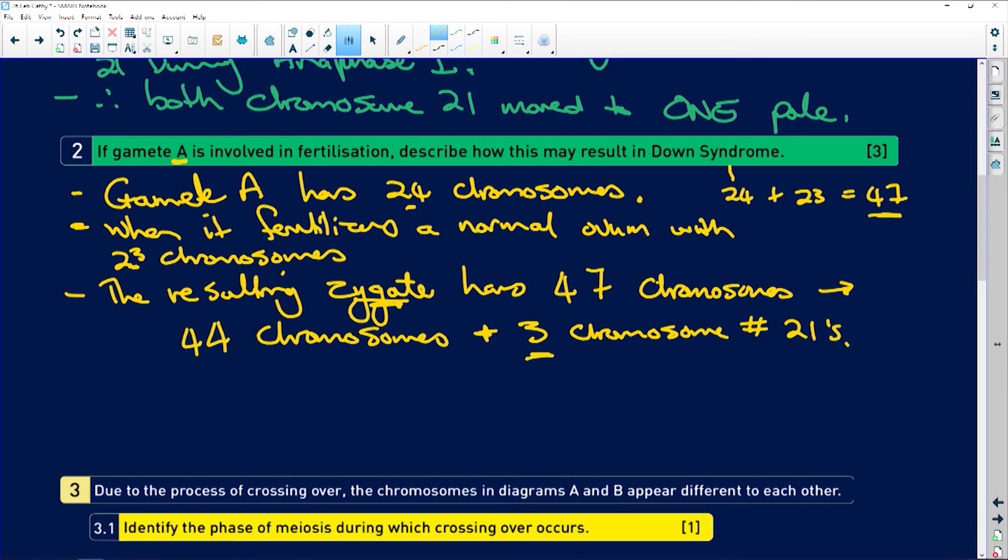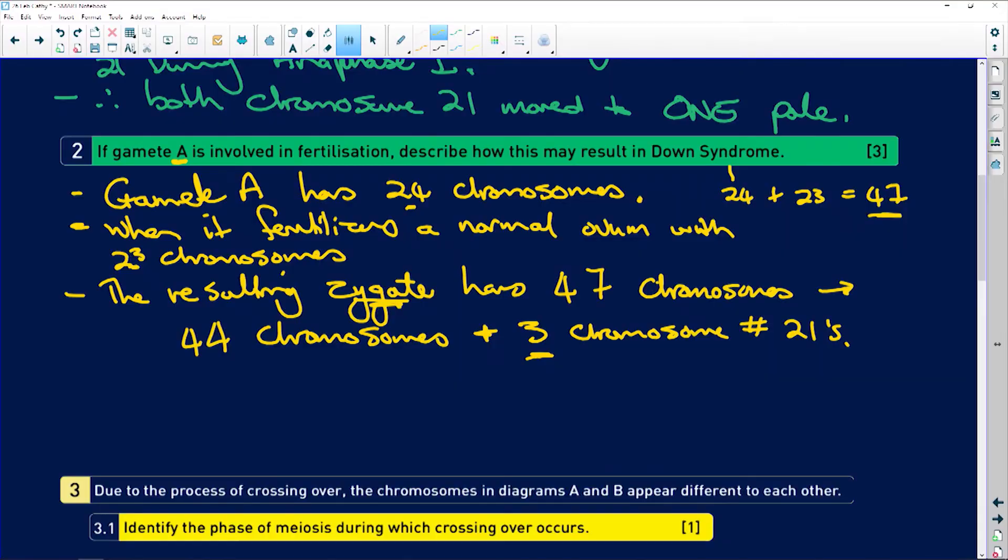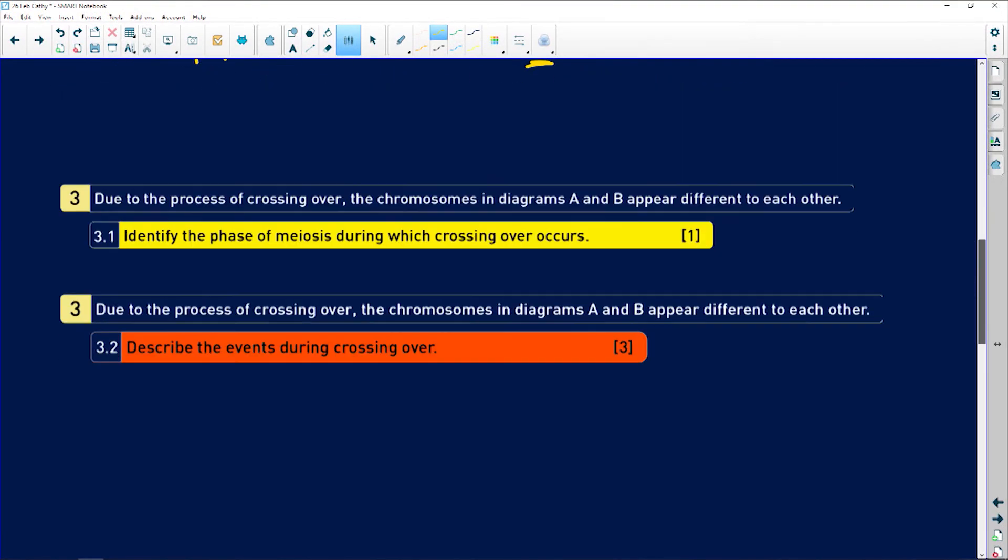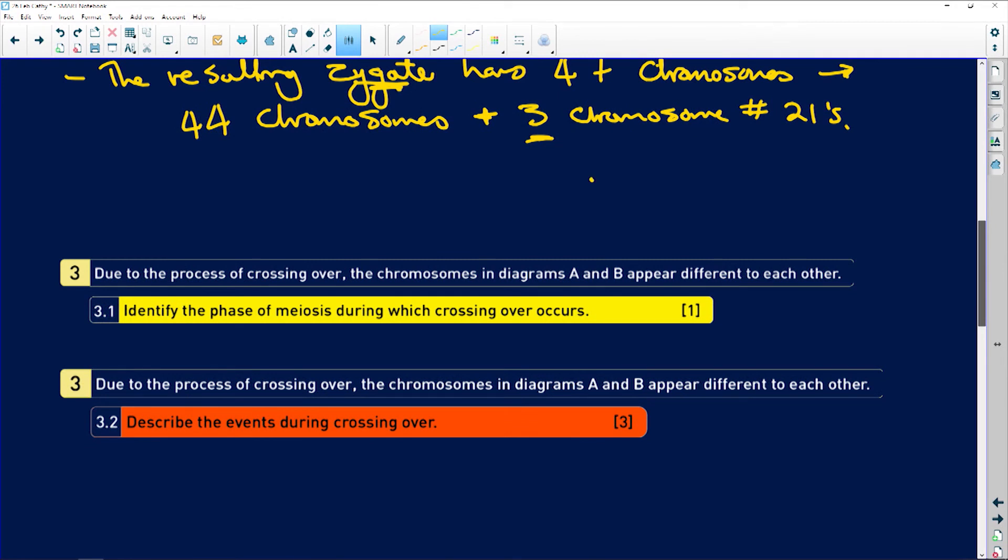Why? Because it has 44 chromosomes plus three chromosome number 21s. It's got three of them. Not two, three. Not one from mom, one from dad. It's got two from dad and one from mom. Chromosome 23. And that's called, when you have three chromosomes or three of the same chromosomes, it's called trisomy.